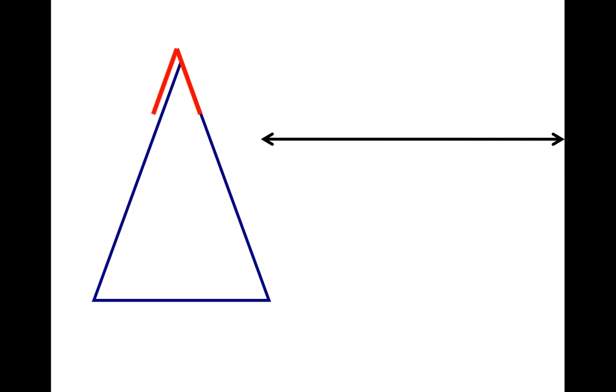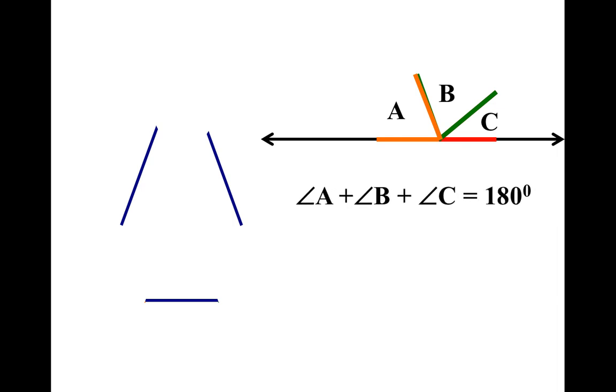So if I took this triangle, and I copied and pasted, and I took this corner, and I placed it right next to it, and I took this corner, and I placed it right next to it, it would line up perfectly. It means that all three of these angles, angle A, B, and C, would add up to 180 degrees.